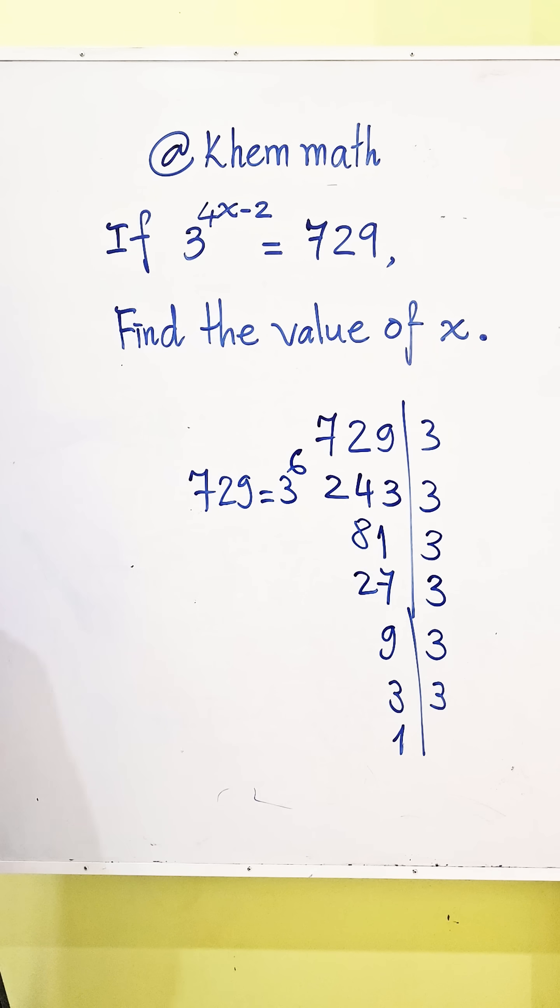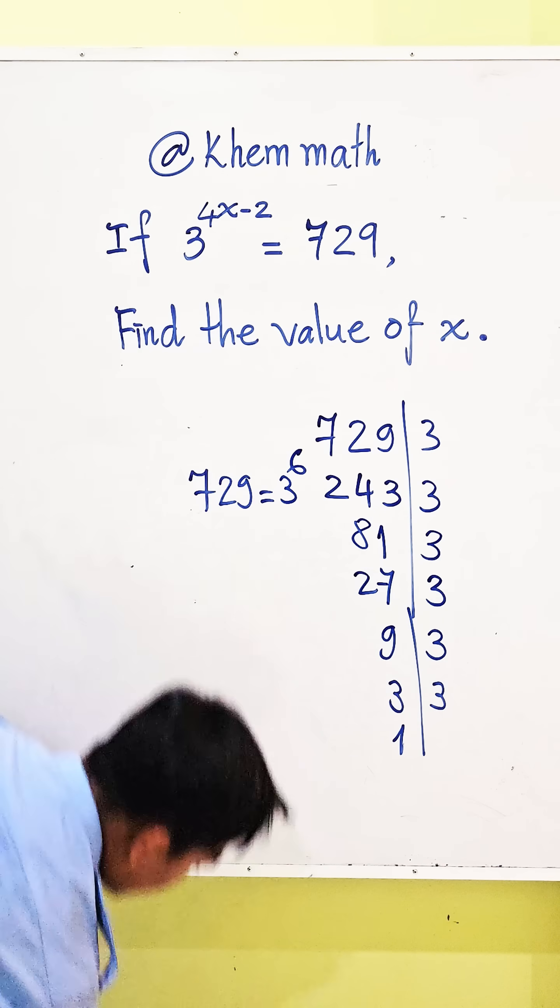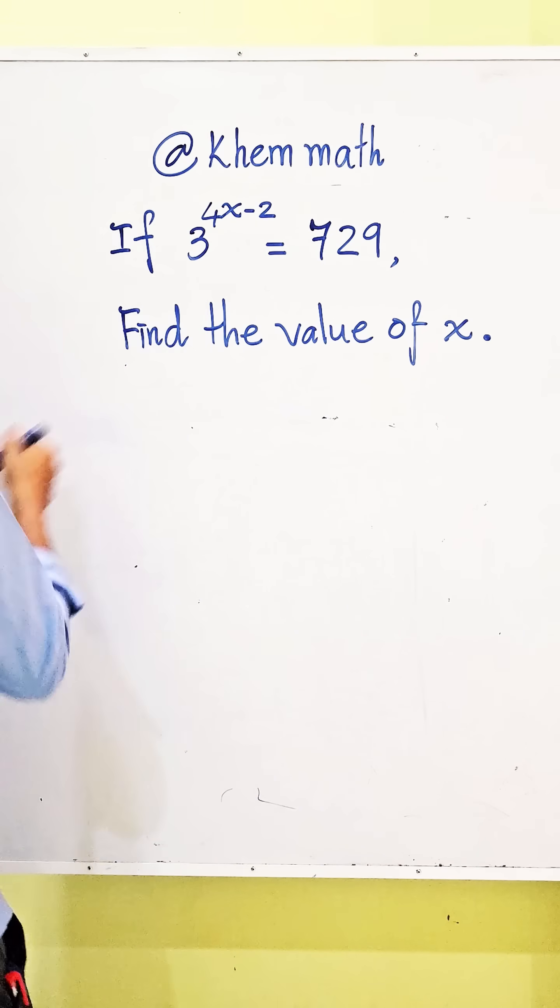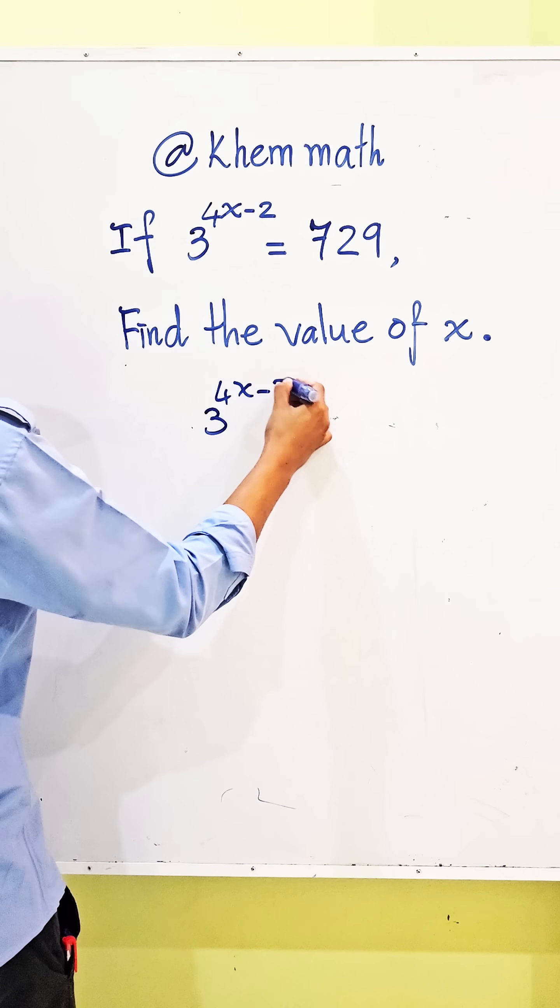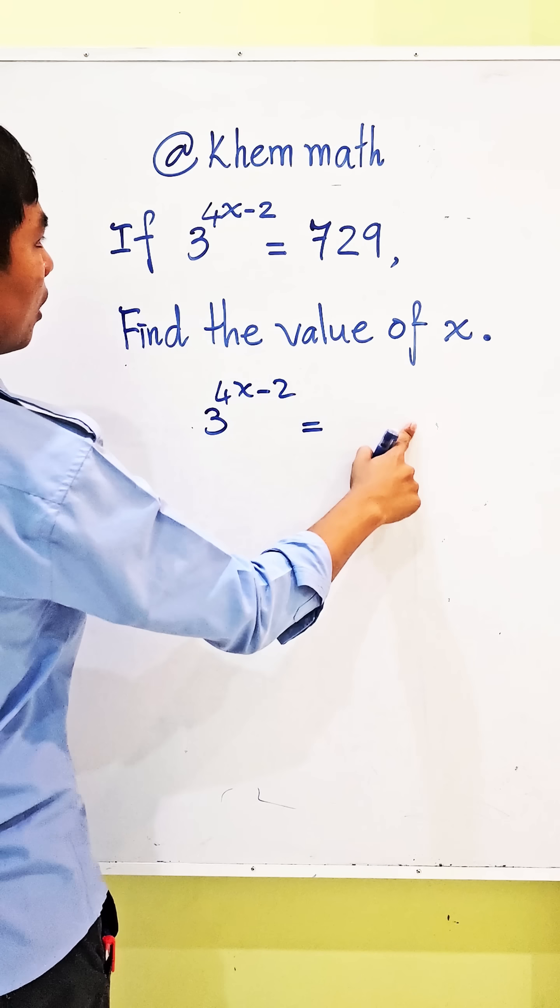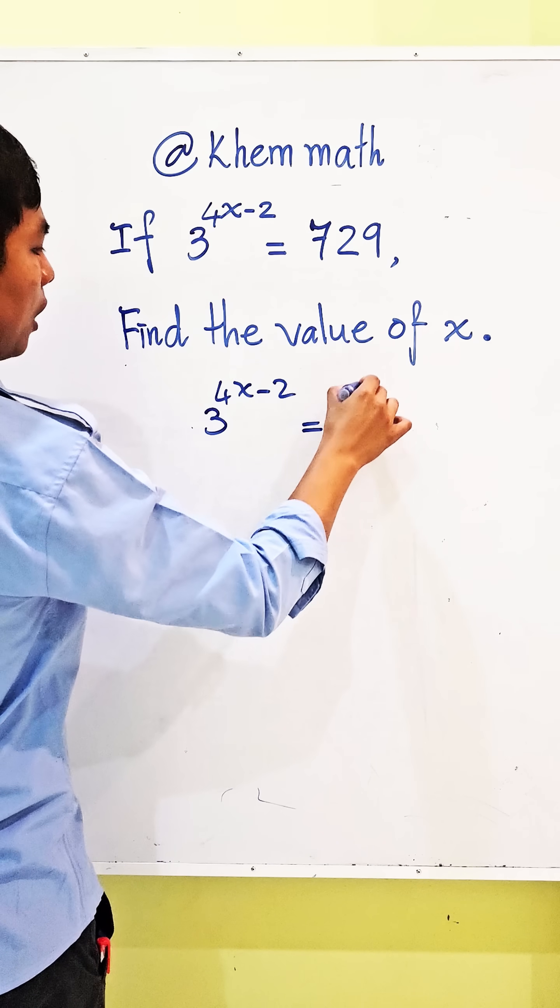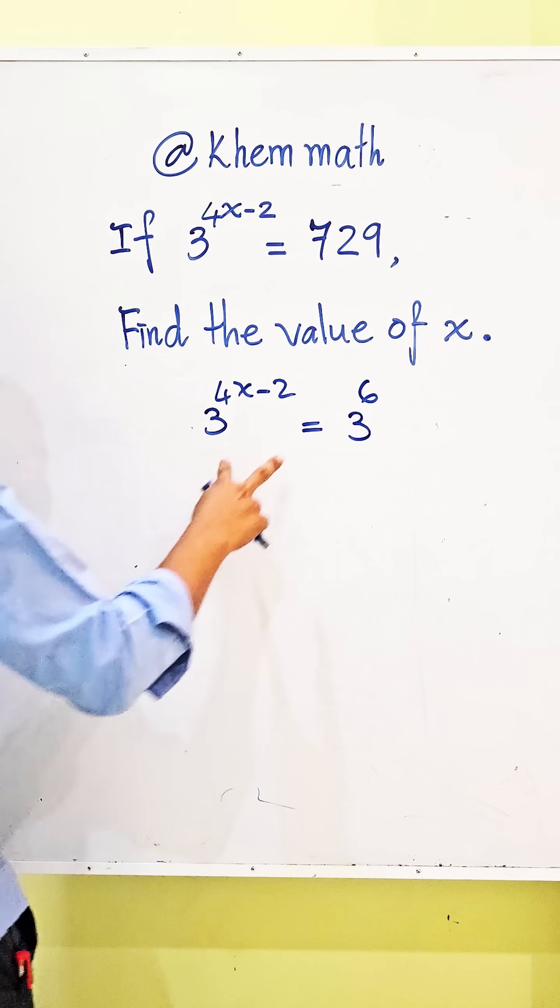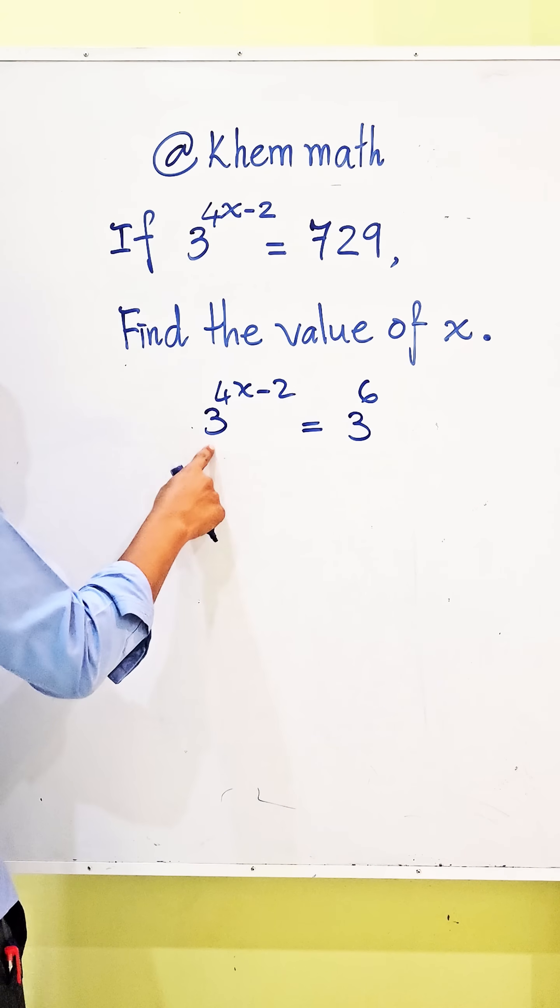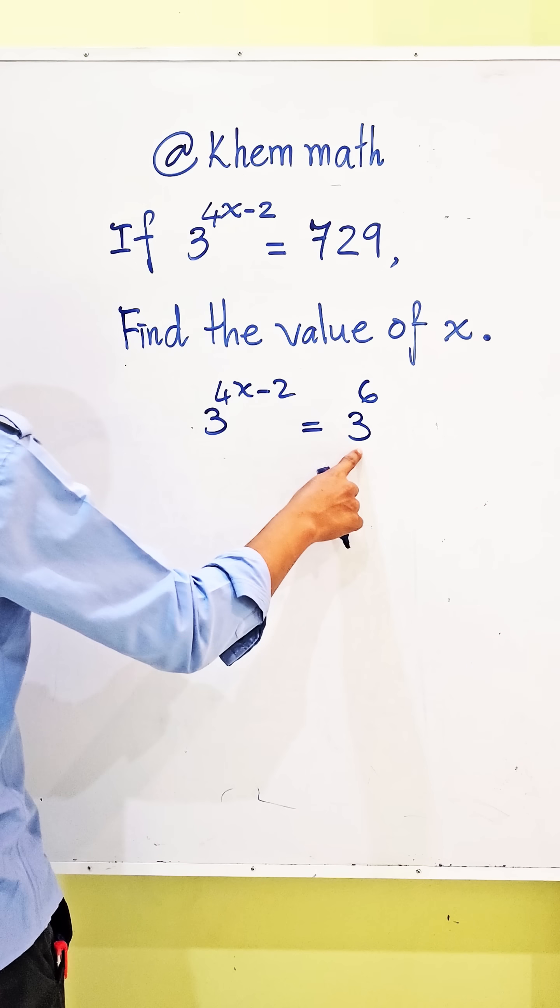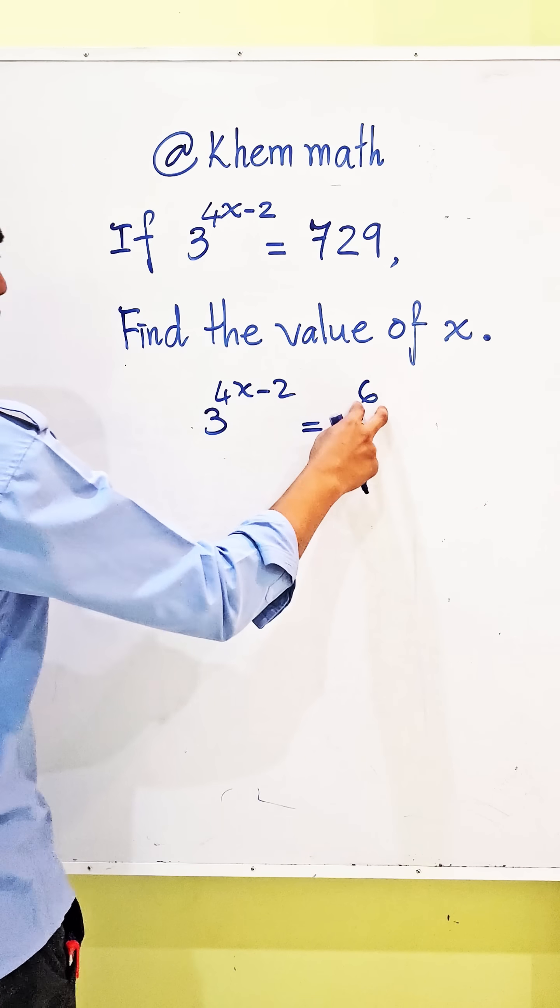So now we take this and we get 3 power 4x minus 2 equals 3 power 6. Now, if the equation has the same base, so we take exponent equal exponent.